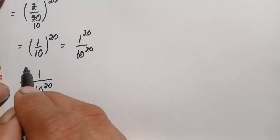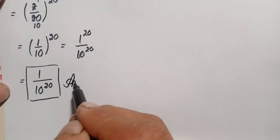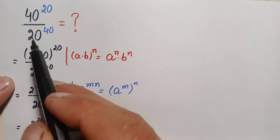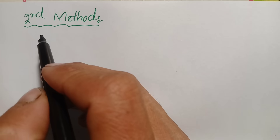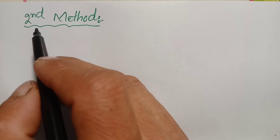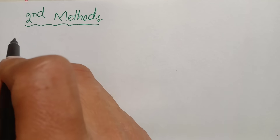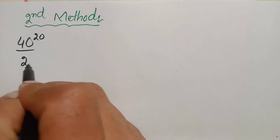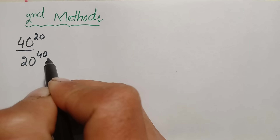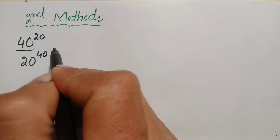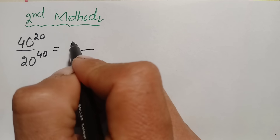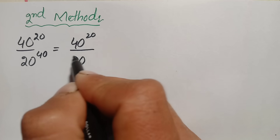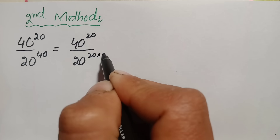So the final answer is 1 divided by 10 raised to power 20. Now I will solve the problem using the second method. Our problem is again 40 raised to power 20 divided by 20 raised to power 40. In the second method, we will factorize the exponent in the denominator: 40 = 20 times 2.